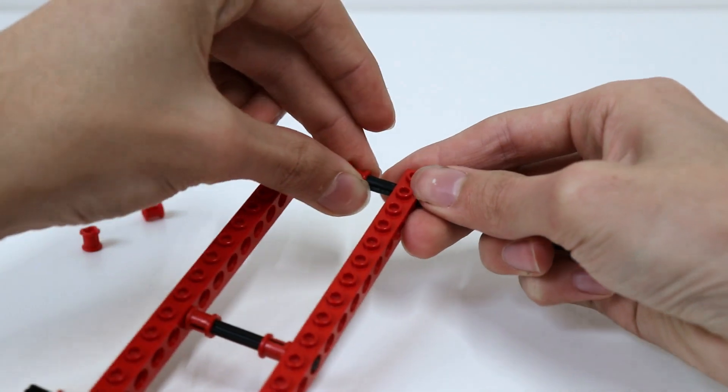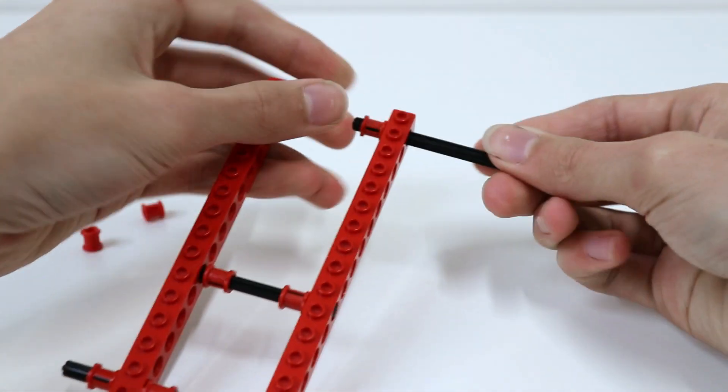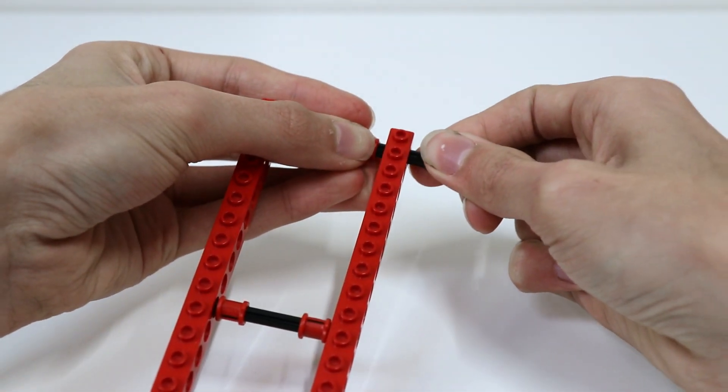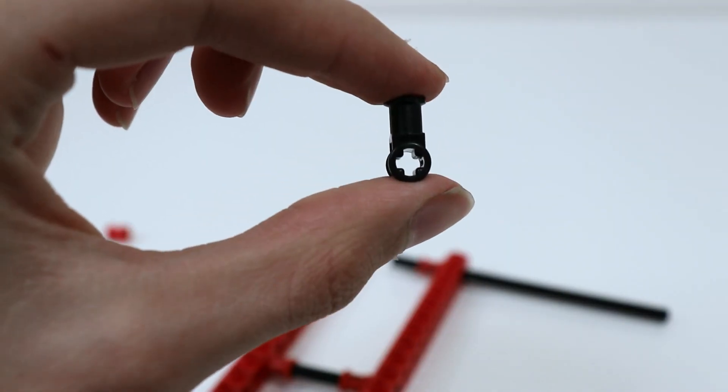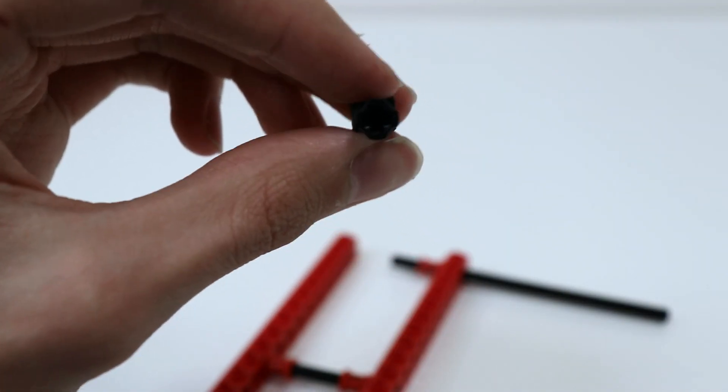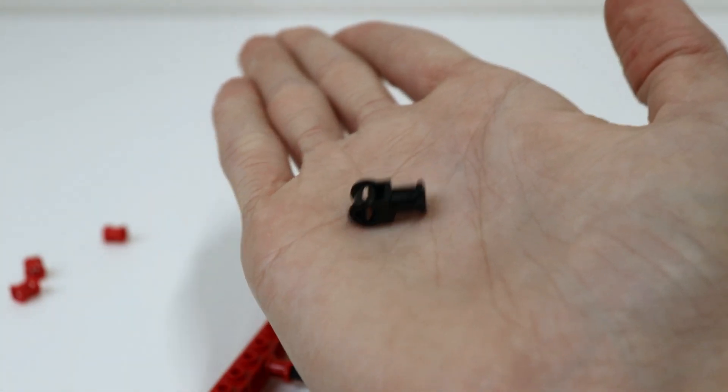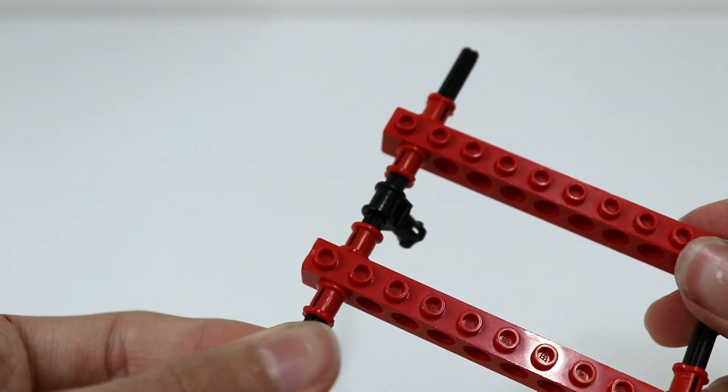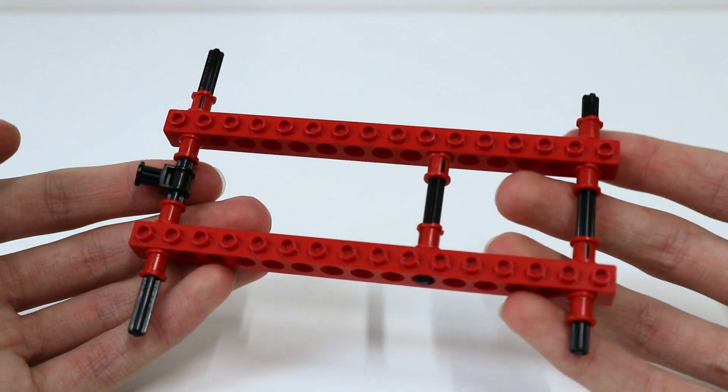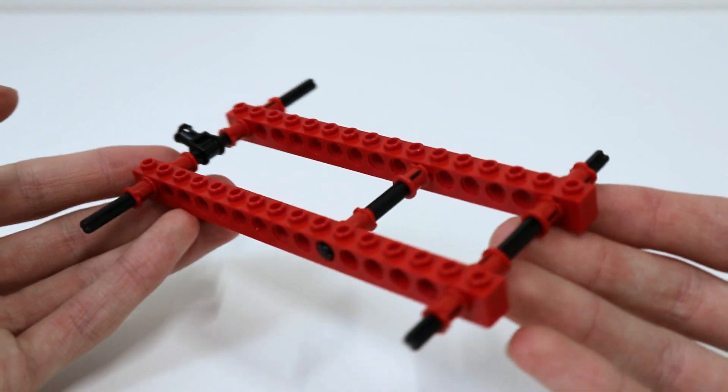And finally we will put the remaining axle in the other end hole. But this will need this special Technic piece to make the car go. Follow similar steps and put the Technic piece in the middle like I've done here. This is important so feel free to pause the video if needed.